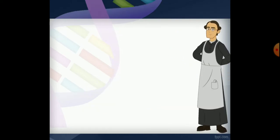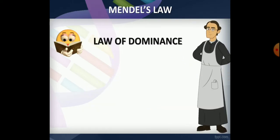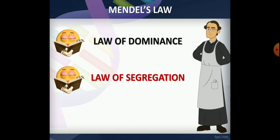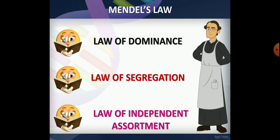The contrasting characters are explained through three laws: the law of dominance, the law of segregation, and the law of independent assortment.